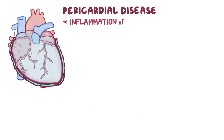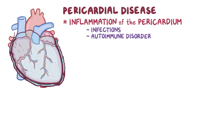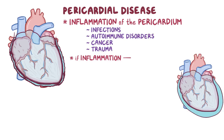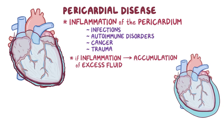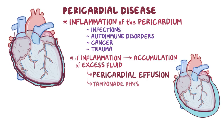Pericardial disease is inflammation of the pericardium due to a variety of causes, from infections to autoimmune disorders, cancer, and trauma. In pericarditis, the pericardium is inflamed and irritated. If the inflammation leads to the accumulation of excess fluid in the pericardial sac, then it's called a pericardial effusion, and in its worst form, that extra fluid can cause tamponade physiology.